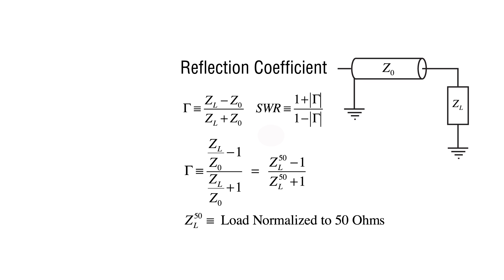This is called the normalized load impedance, which I designate as Z50 sub L. So, for all the examples in this video, the actual impedances — resistive or reactive — will be normalized to 50 ohms, or in other words, will be divided by 50.